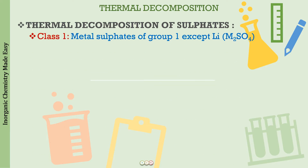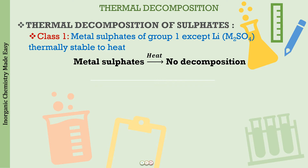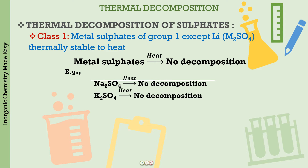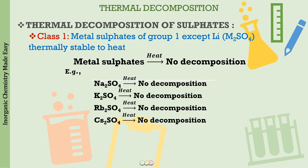Class 1 metal sulfates — the Group 1 metals except lithium — are stable to heat. They do not decompose on heating, just like Class 1 carbonates and hydroxides. For example, sodium sulfate, potassium sulfate, rubidium sulfate, and cesium sulfate — none of them undergo decomposition on heating. No products are formed.